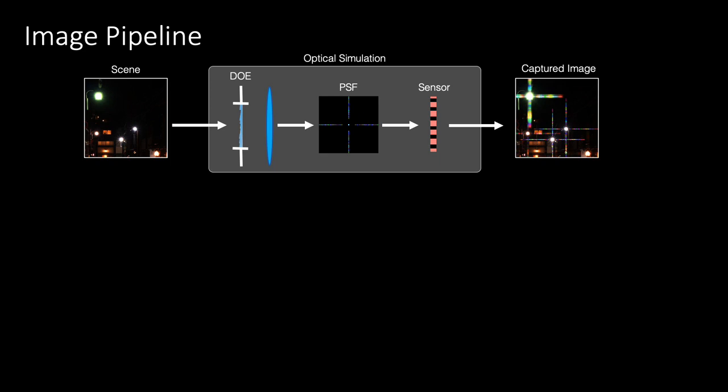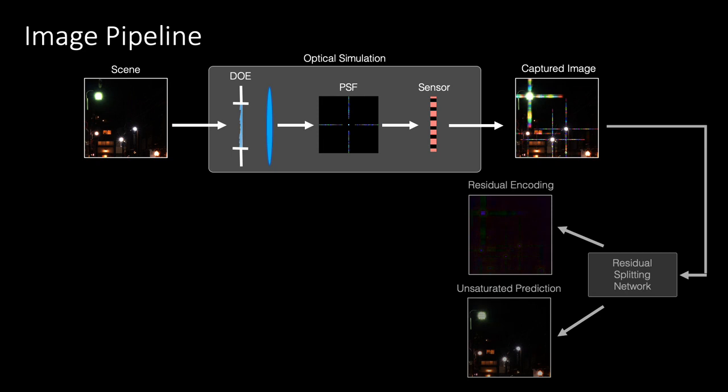We now explain our imaging pipeline. We first begin with an HDR scene. The scene is modulated by our DOE and focused onto the sensor. We simulate this using the point spread function of the DOE.